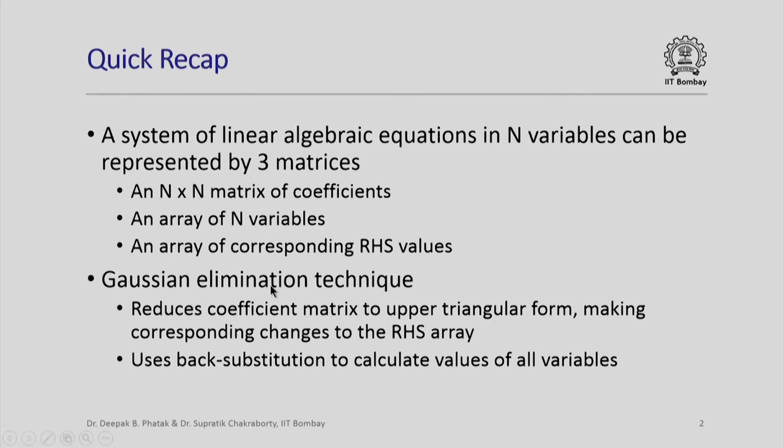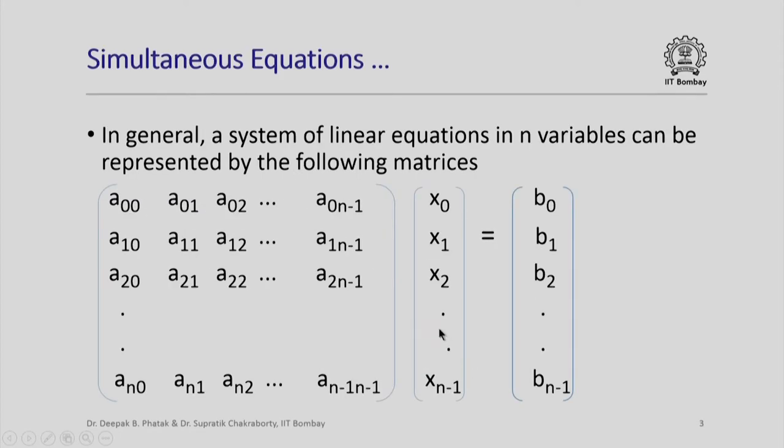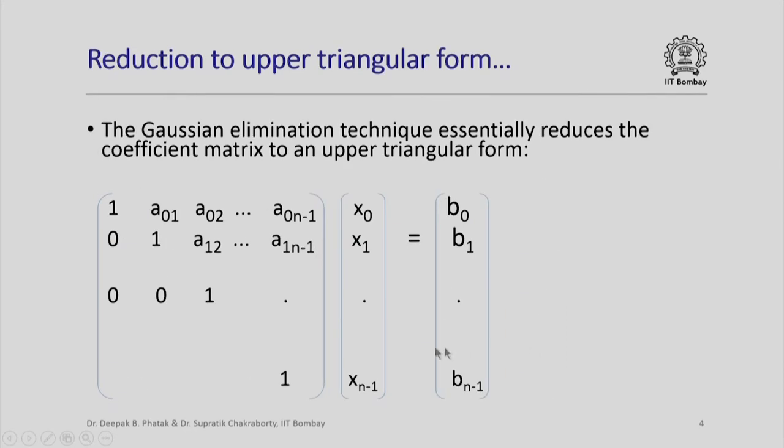The Gaussian elimination technique we recall reduces the coefficient matrix to upper triangular form making corresponding changes to the right hand side array and we then use back substitution to calculate values of all variables. Here is a quick recap of some of the representation. This is the general system of linear equations in n variables represented by matrix which will have the coefficients, the vector of unknown variables and the right hand side vector of values B naught to be n minus 1.